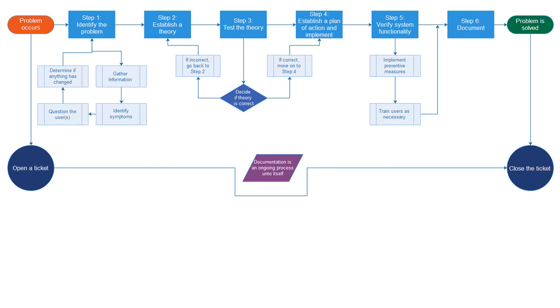So that, in a nutshell, is a little flow chart of the six-step troubleshooting process. You can write it out this way, or you could just write it out on paper, step-by-step, however you want to do it.